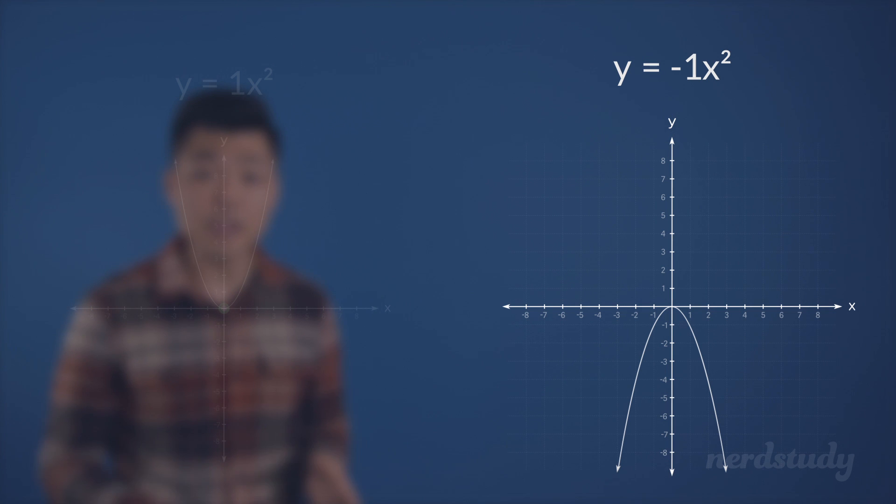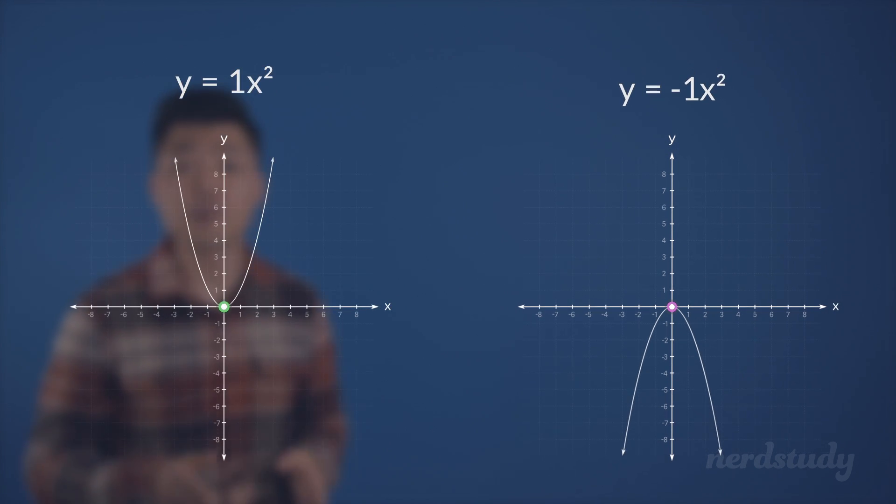And as you can see, if a graph opens downwards, or shall I say, has a negative a value, then the vertex is actually the highest point on the graph. In fact, a lot of books will refer to the vertex as being the minimum point in this example, and the maximum point in this one.